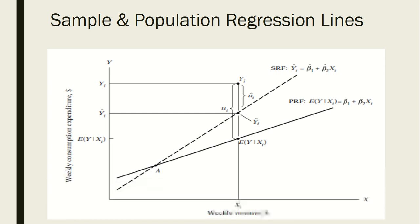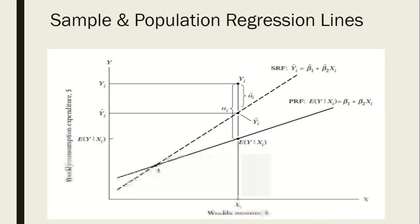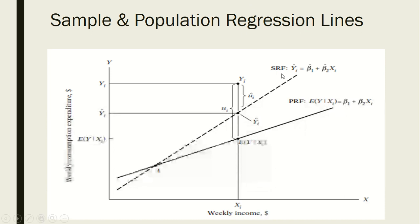The population regression line is equal to beta 1 plus beta 2 times xi, where beta 1 is the intercept, beta 2 is the slope of the line, and x is the independent variable. Likewise, we have the sample regression function, which is the estimated form because it is based on samples. It is difficult to observe the population regression function directly, so we have to use the sample regression function. As you can see in the graph, the sample regression function is not a true picture of the population regression function, just because of sampling errors.